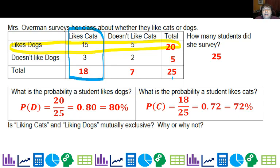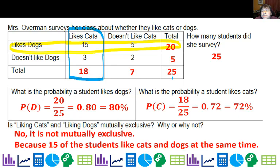Is liking cats and liking dogs mutually exclusive? No, it is not mutually exclusive because I've got 15 students who like cats and dogs at the same time. By the way, if I had added those probabilities, here's a hint. They add up to more than 100 percent. So that means they have to have some overlap, and you can tell that there are those 15 students who overlap between liking cats and liking dogs.